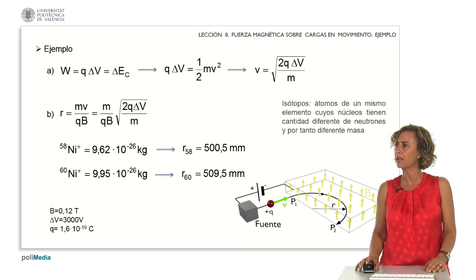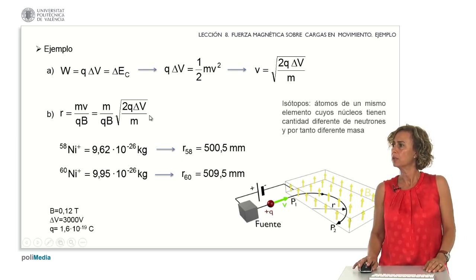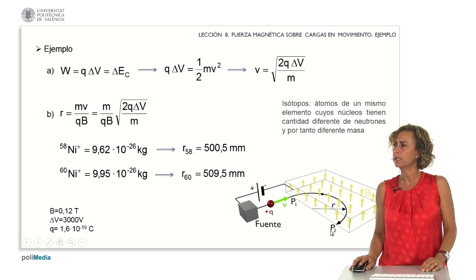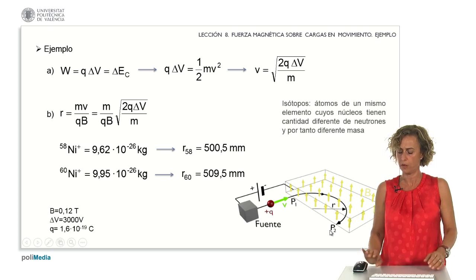These calculations indicate the radius for both cases are different, and therefore the P2 that will reach one and the other will be different, which will allow us to differentiate whether it is an isotope 58 or 60.